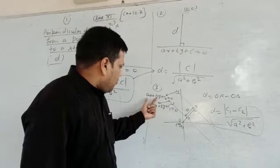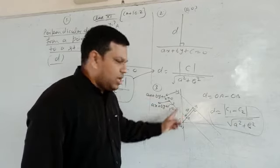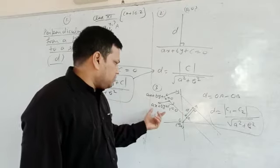And the next equation must be AX plus BY plus C2 is equal to 0. Why these coefficients are same? Because these two lines are parallel, so the coefficient of X and Y must be same.